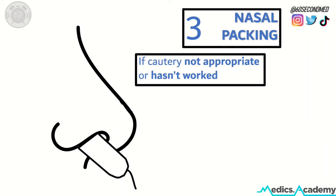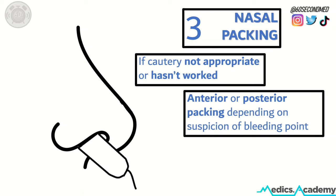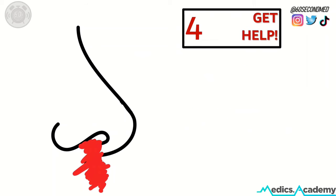If we do that and the nose is still bleeding, we can consider nasal packing if the cautery hasn't worked or it wasn't deemed appropriate in the first place. We can do it anteriorly or posteriorly depending on where we think the bleeding point is.